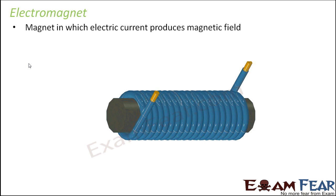Construction-wise, an electromagnet generally consists of a large number of closely spaced turns of wire. As you can see here, this blue thing is the wire which is wound over a core. If the core is magnetic — for example, made up of iron — it can make the electromagnet all the more powerful. So the strength of the electromagnet depends on the material of the core. When current flows through the wire, magnetic field is produced — that is how an electromagnet works.